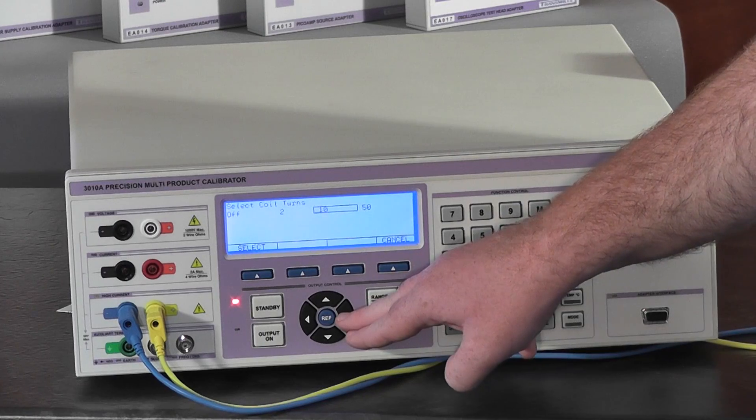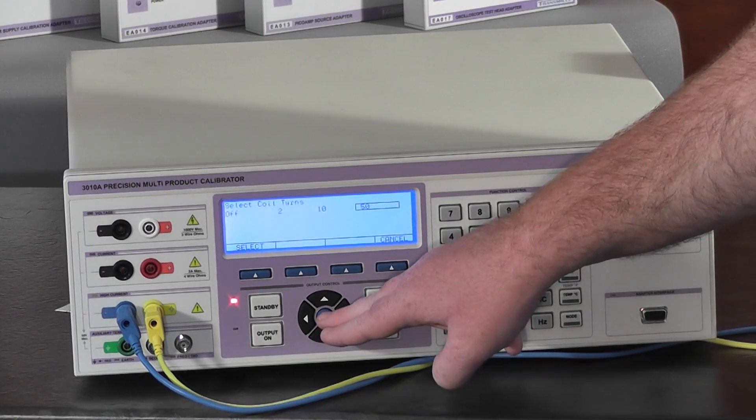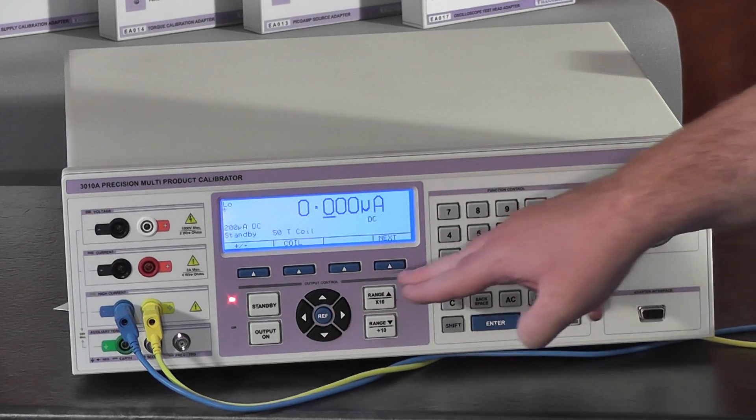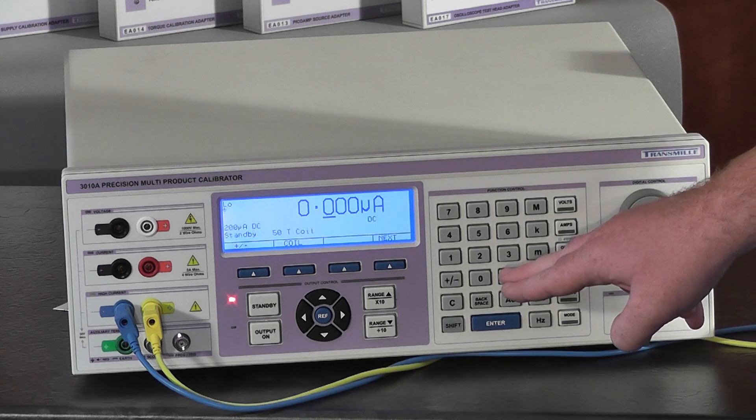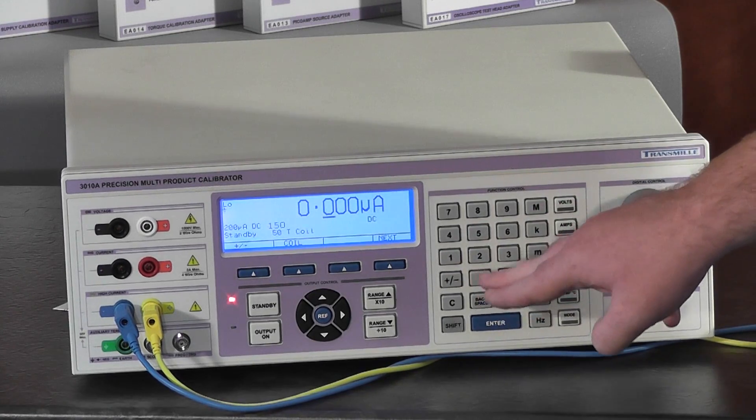Select the number of turns required, 50, and then enter the current we want to simulate, which will be 1500 amps.